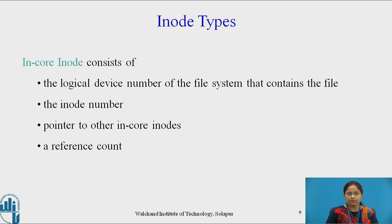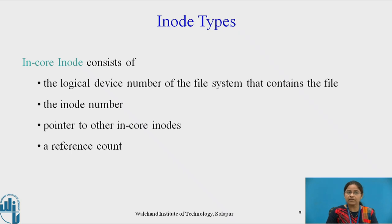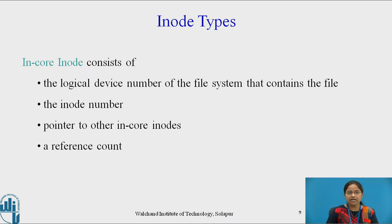A reference count shows how many instances are linked to the currently executing file. To differentiate between an in-core inode and a disk inode: a disk inode is the copy of the inode on disk, while an in-core inode is the copy of the inode in memory. The in-core copy contains the contents of the disk inode copied into memory, plus all the additional in-core fields. The content of the in-core copy of an inode may differ from the disk copy if there is a change in the file contents.